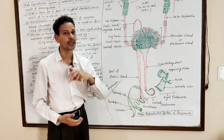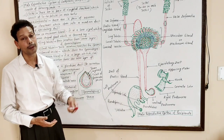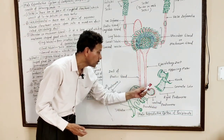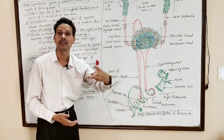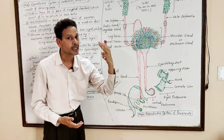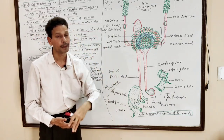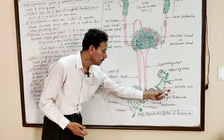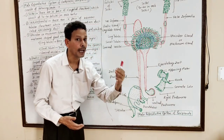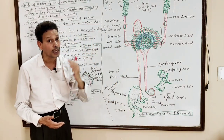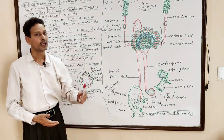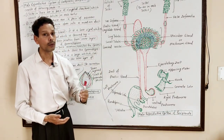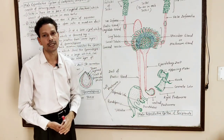An important question for all competitive exams: in the case of male cockroach, three chitinous structures are present. These three chitinous structures are the external genitalia, also called phallomeres or gonapophyses.